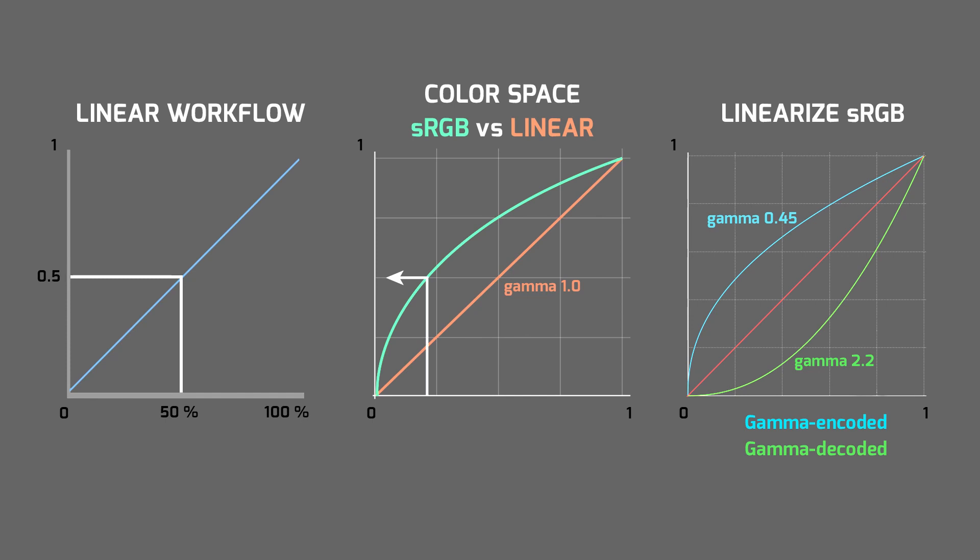As an example, if I am using a Maxon noise, constant color, or round node to control material properties such as roughness or displacement and I would like to have a physically correct result, I have to linearize color-based nodes, because color-based nodes use the sRGB color space.